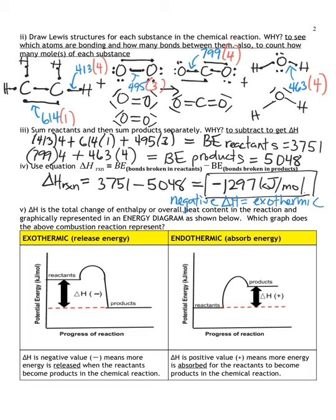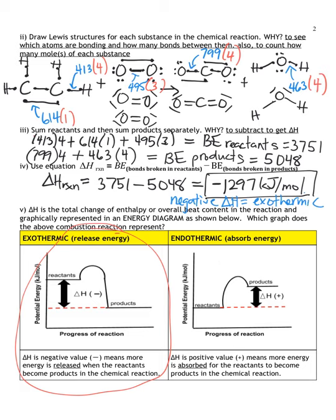The reactants are C₂H₄ and 3O₂. As they become products — CO₂ and H₂O — energy is released. The potential energy is lower for the products than the reactants. That released energy amounts to 1,297 kJ/mol. That ends this page; let's look at the next page.